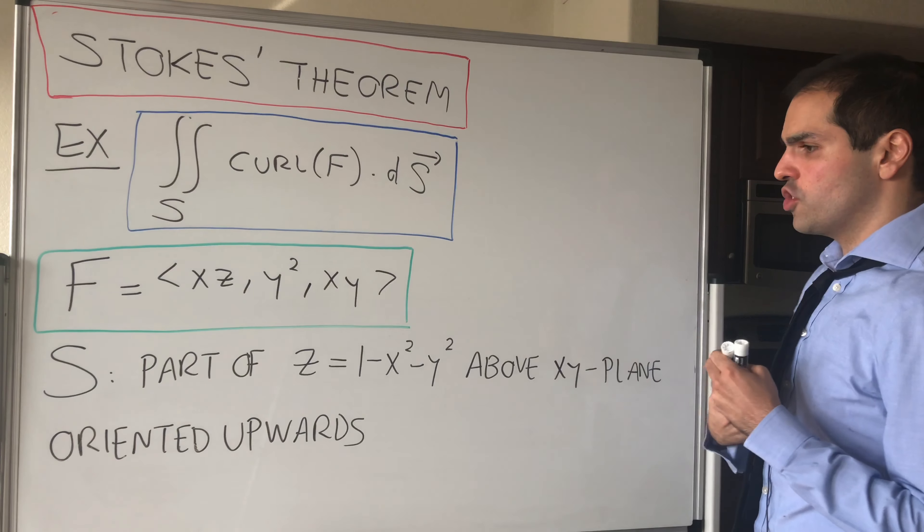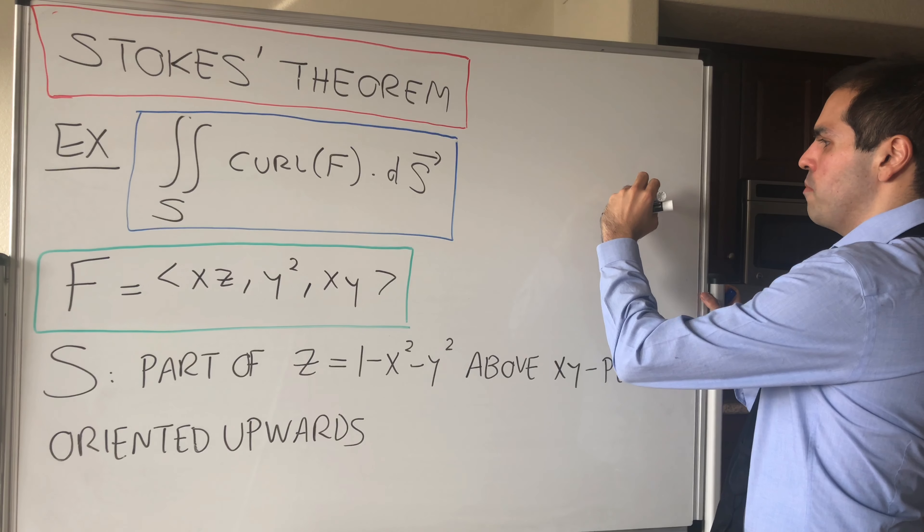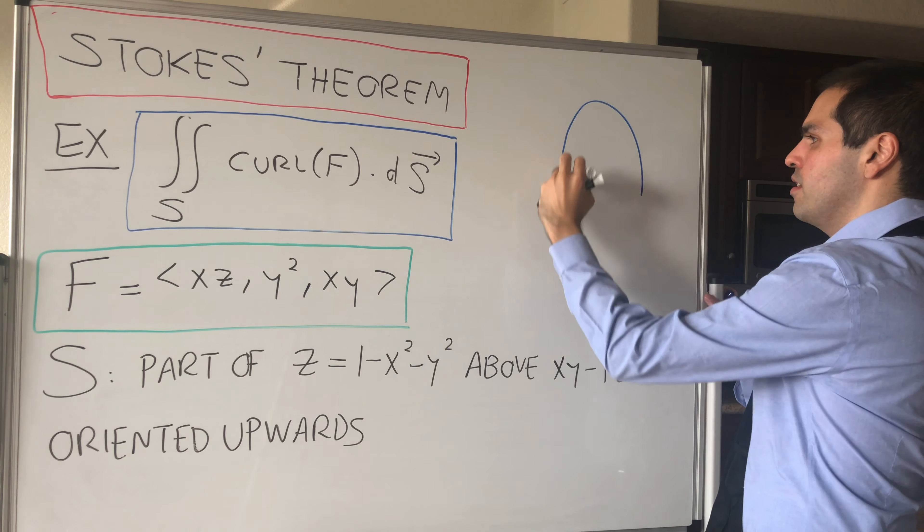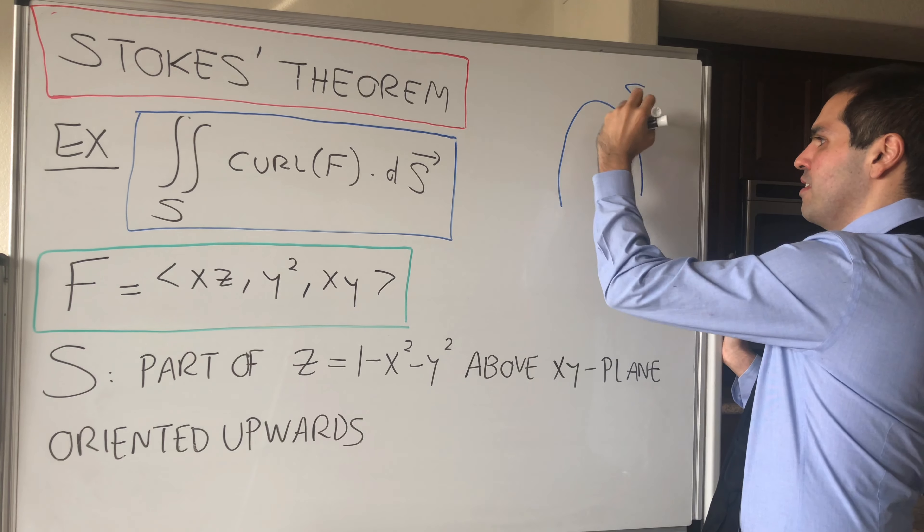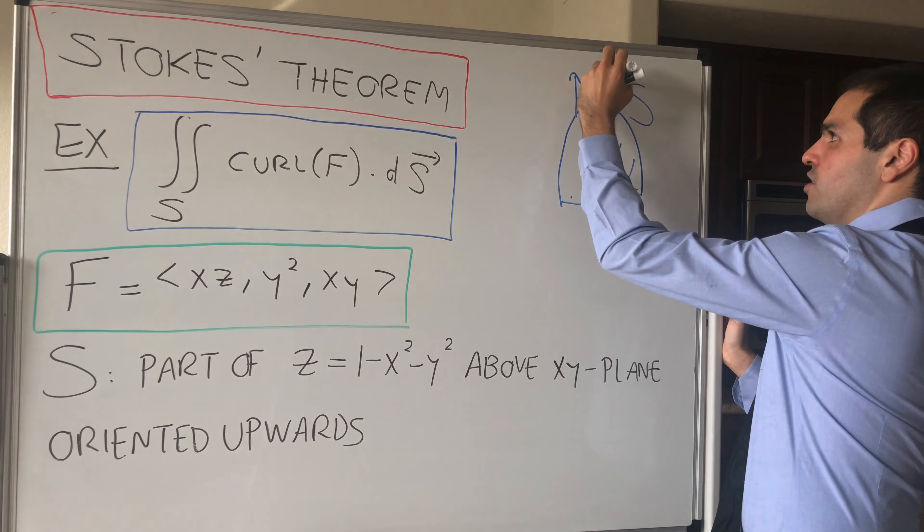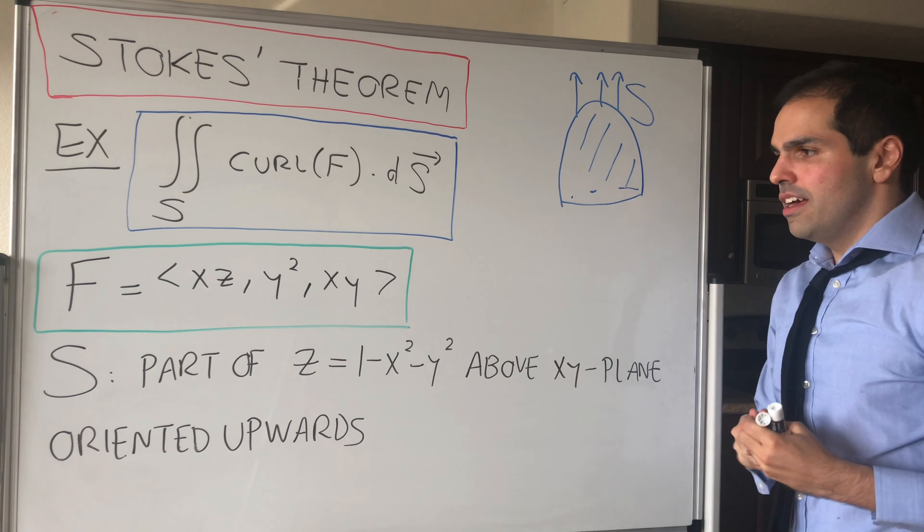So first, let's draw a picture of this surface. As I said, what it looks like is just a paraboloid, so think 1 minus x squared, so it might look something like that, and with the upward orientation, meaning that the normal vectors face upwards.